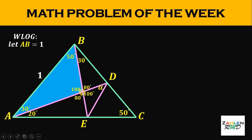Consider the triangle on the bottom. We have angles of 20 degrees and 80 degrees, so the remaining angle must be 80 degrees — a total of 180 degrees. Similarly, on the triangle on the top, we have 30 degrees and 80 degrees, a total of 110 degrees. Therefore, the remaining angle must be 70 degrees.